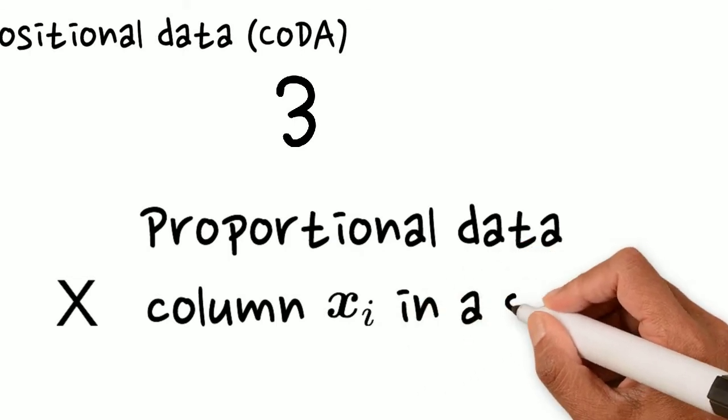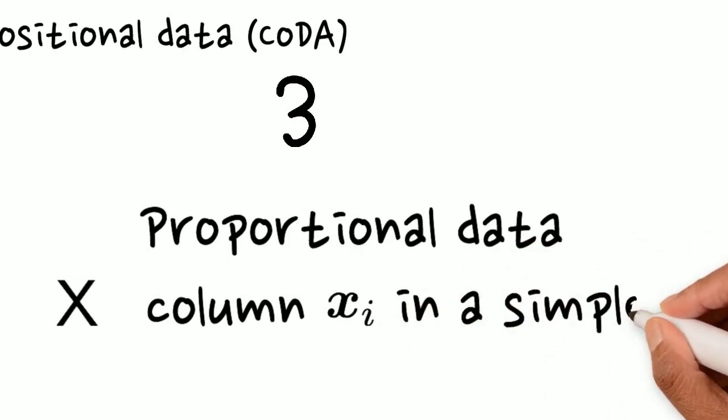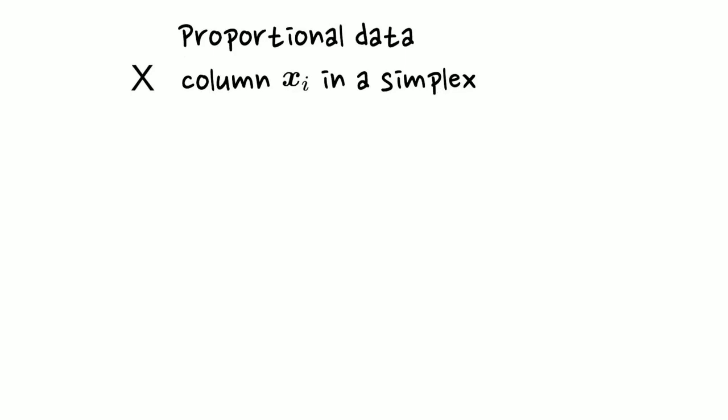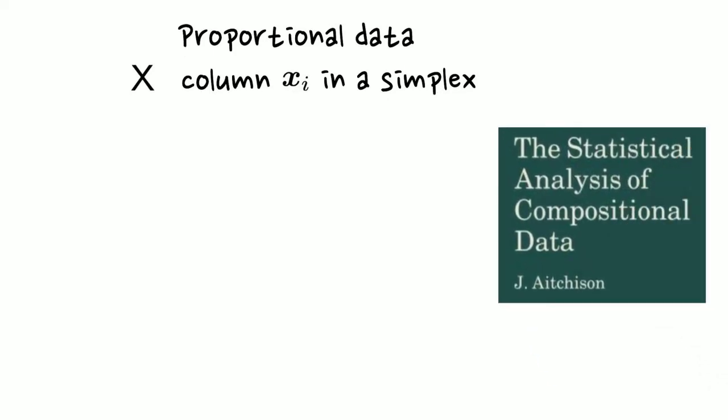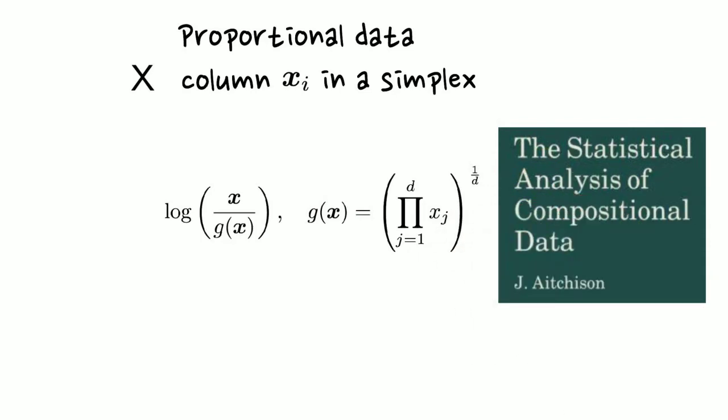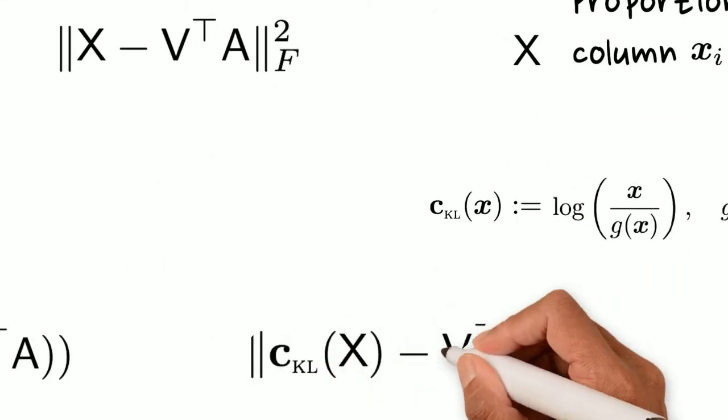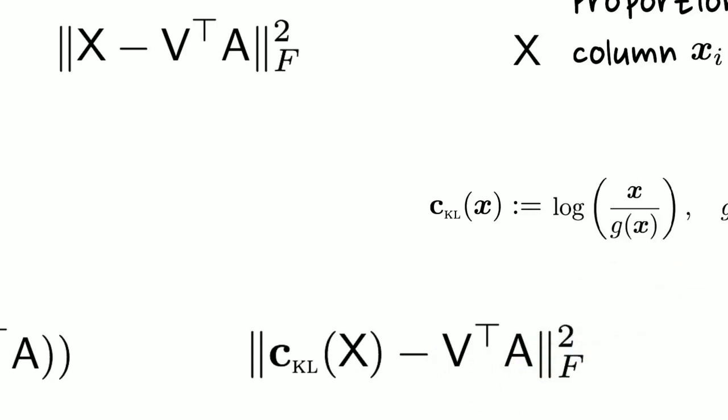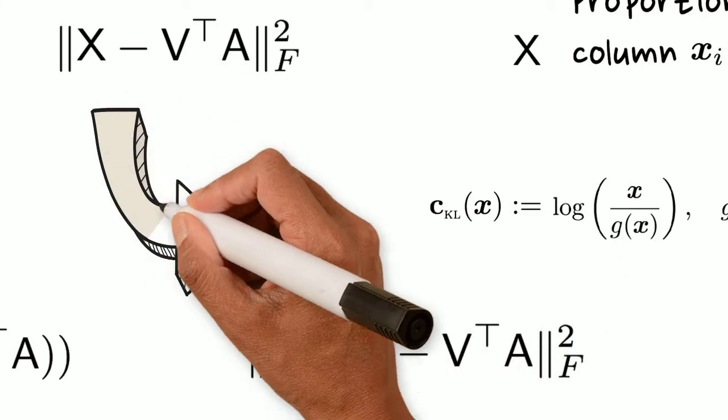In other words, each column of the matrix X is in a simplex. X now lies in the so-called Atchison geometry, and the data needs to be log transformed and normalized before further analysis. We focus on the centered log ratio transform, where the normalizer is the geometric mean of the data.